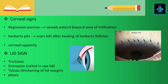Now let's see the corneal signs. Here there will be regressive pannus, because the vessels extend beyond the area of infiltration. Also there will be Herbert pits, which are nothing but the scars left after healing of the Herbert follicles. There will also be corneal opacity.